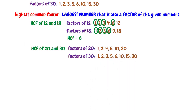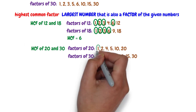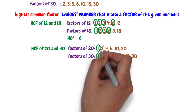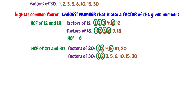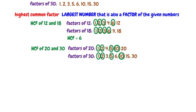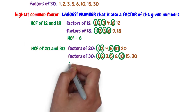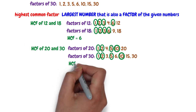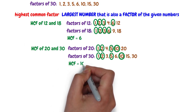The common factors of 20 and 30 are 1, 2, 5, and 10. The largest factor is 10. Therefore, the highest common factor of 20 and 30 is 10.